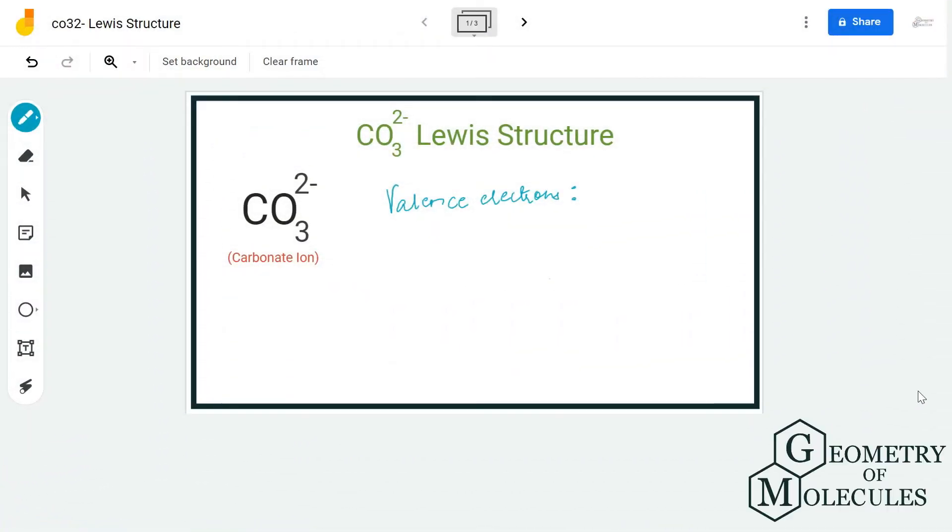Hi guys, today in this video we are going to look at the Lewis structure for carbonate ion. It has a chemical formula of CO3^2-. The two minus indicates a negative charge that this molecule has.